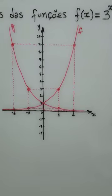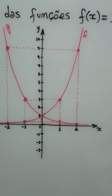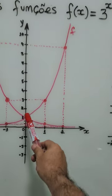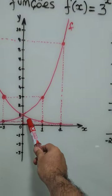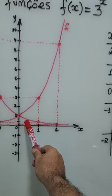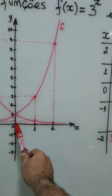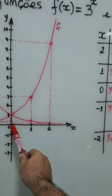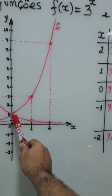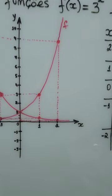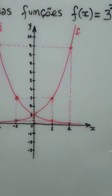The graph of the exponential function always passes through the point where x is equal to 0 and y is equal to 1.